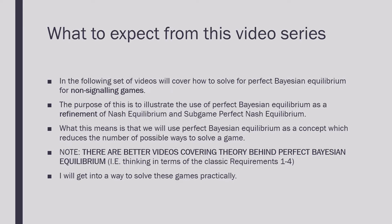In the following set of videos, we are going to solve for perfect Bayesian equilibrium in non-signaling games. The purpose of this series is to illustrate how to use perfect Bayesian equilibrium as a refinement of Nash equilibrium and subgame perfect Nash equilibrium. What this means is that we'll be using perfect Bayesian equilibrium as a concept which reduces the number of possible ways that we could solve a game as given by Nash and subgame perfect Nash equilibrium.